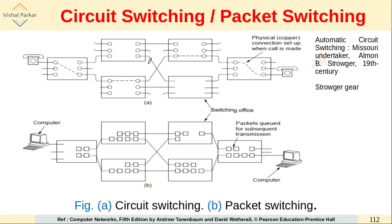There are rectangular boxes shown which represent the end offices or toll offices. Each office has the switching office, having three input lines and three output lines. When one party wants to communicate with another, the call request is sent. The switching office tries to connect that input line to one of the outgoing lines, effectively finding a particular path which is established first, and then the communication happens. That is why it is called circuit switching.